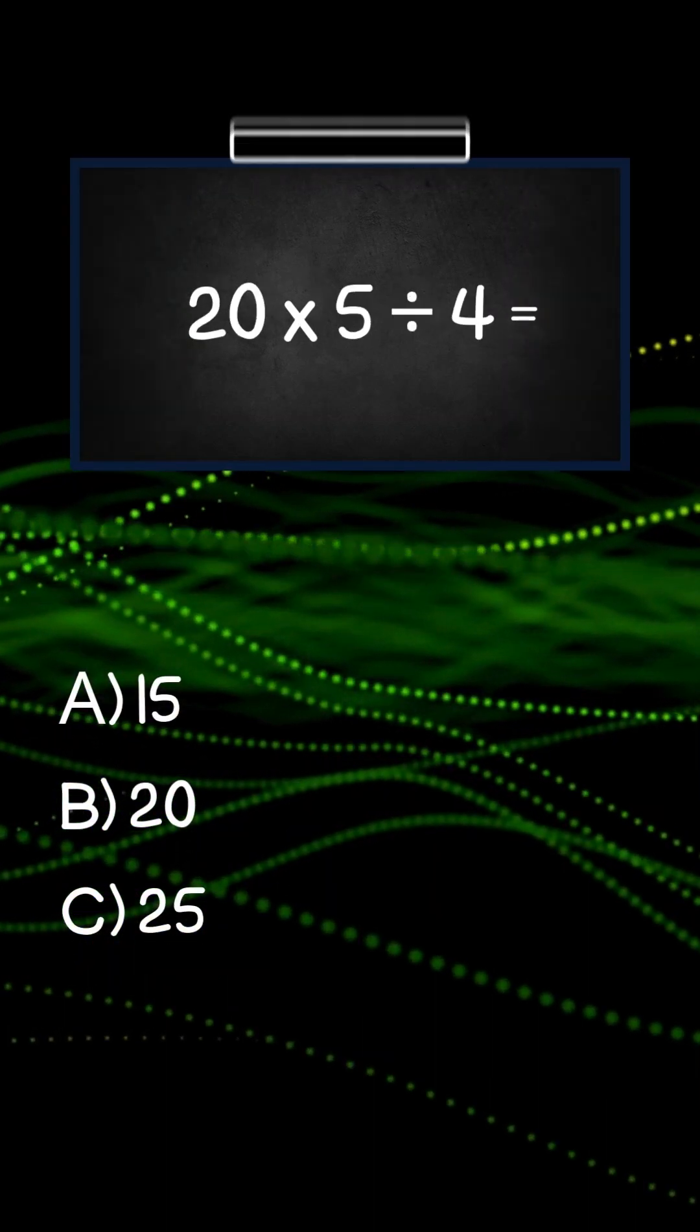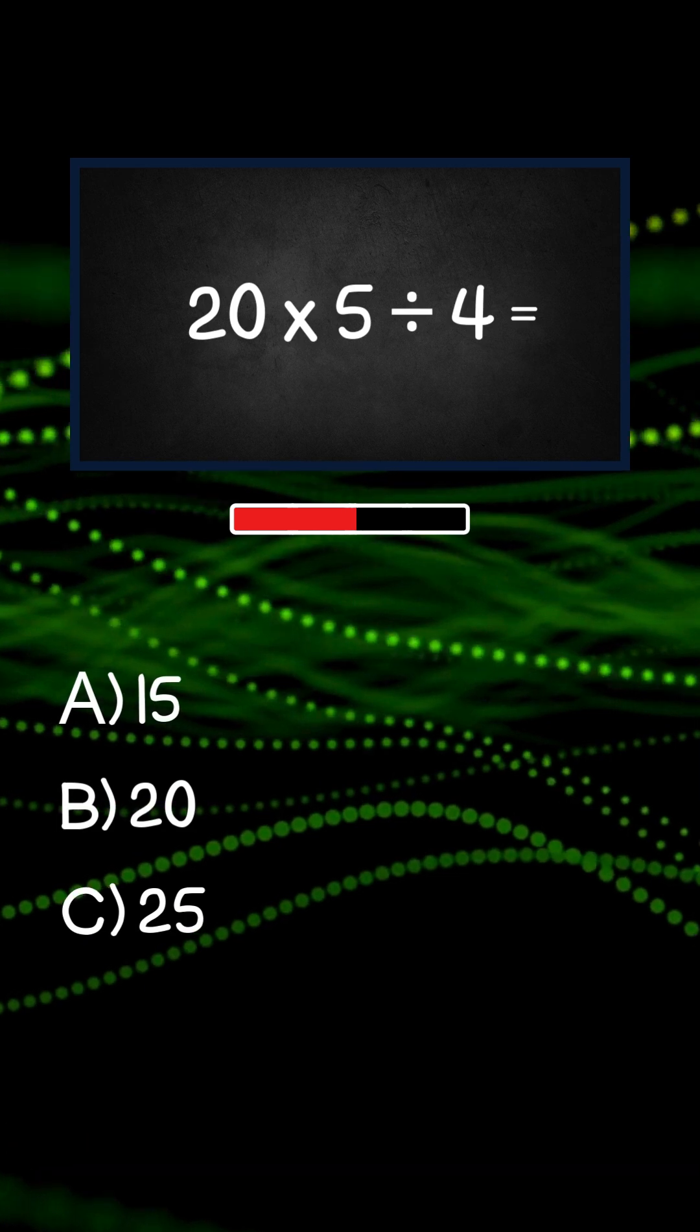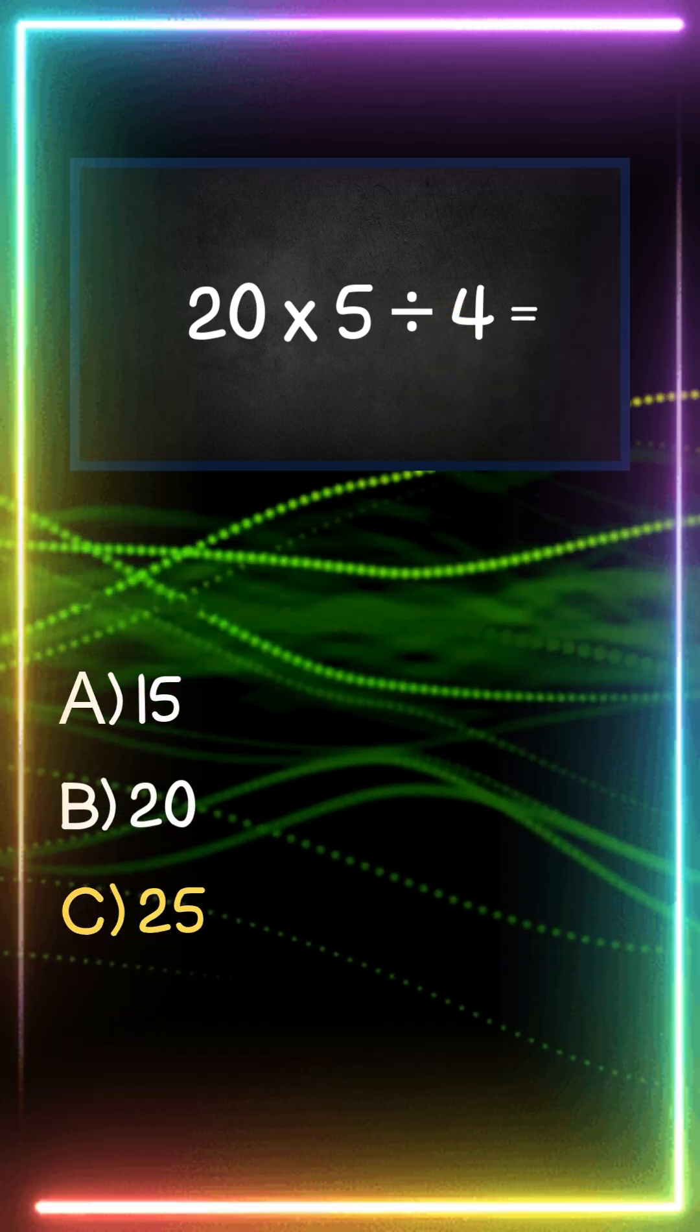20 times 5 divided by 4 is? Answer C, 25.